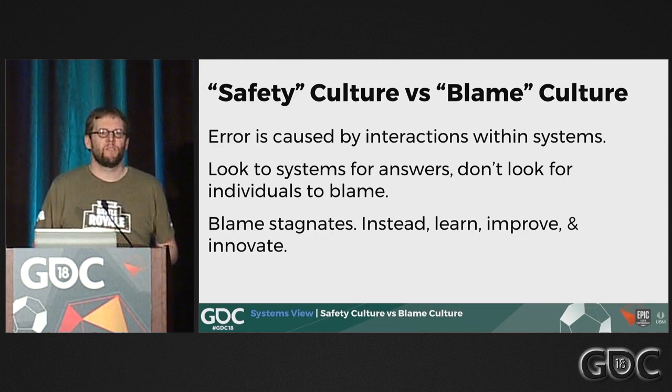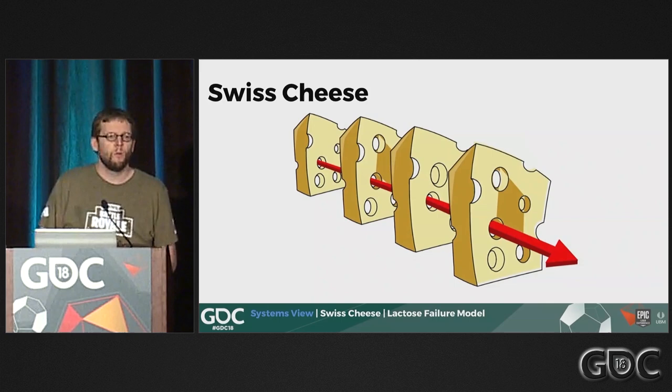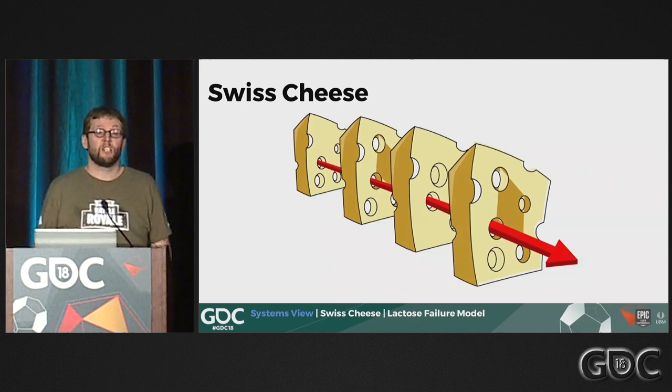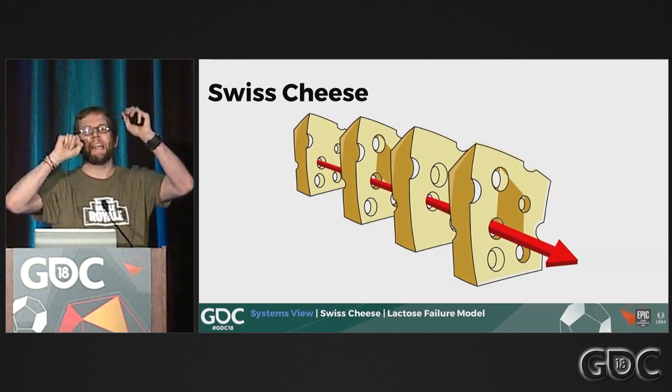Where cheese is involved: a common model used here is called the latent failure model, or the Swiss cheese model. Within organizations and games there are all these different systems interacting. Most of the time they're solid, but within each system there'll be holes. When certain systems line up, an error will occur when all those holes align — it wasn't just one piece of cheese; all four pieces had to be in a line.